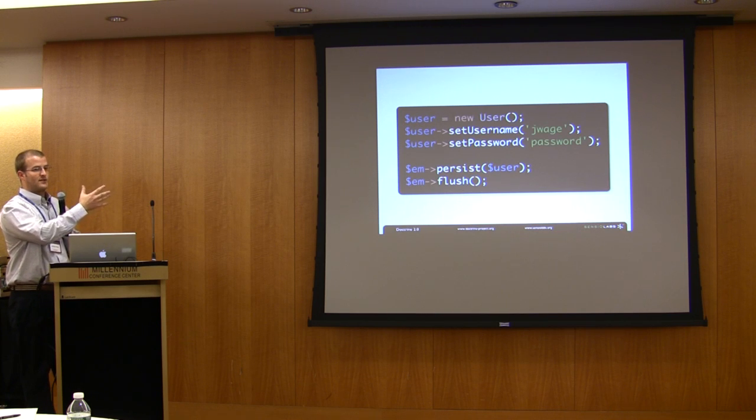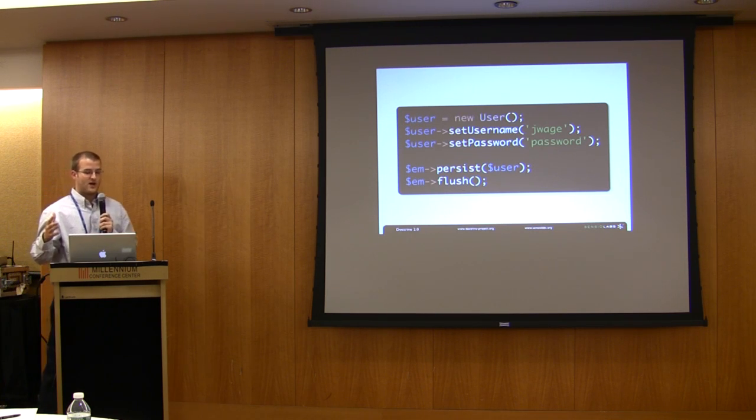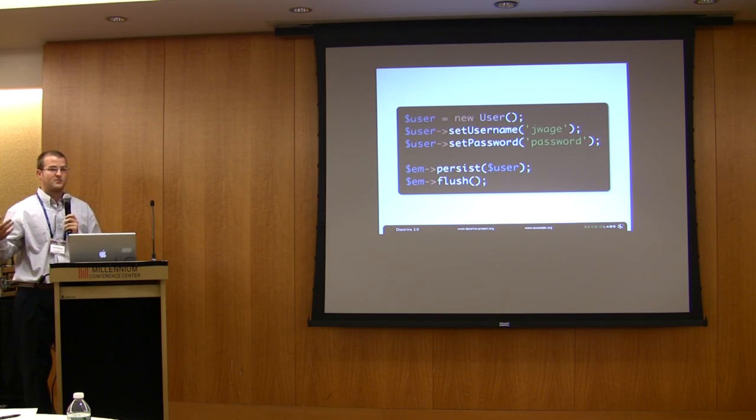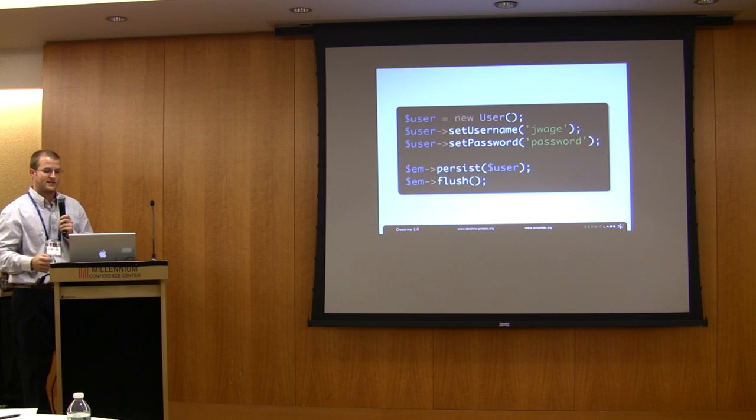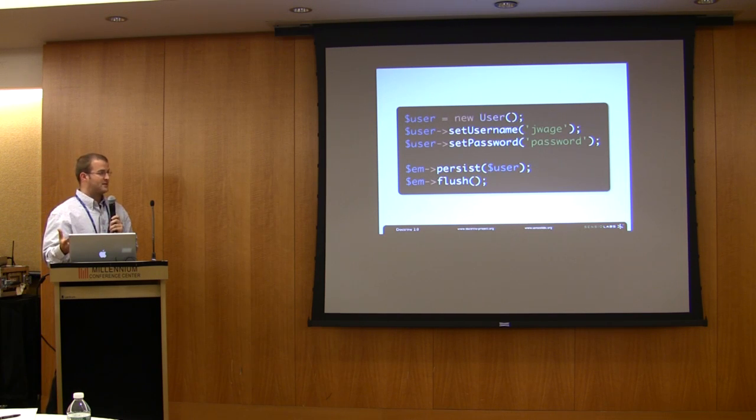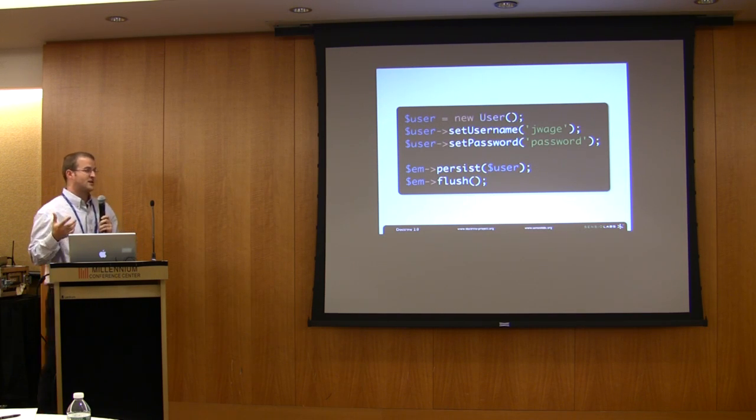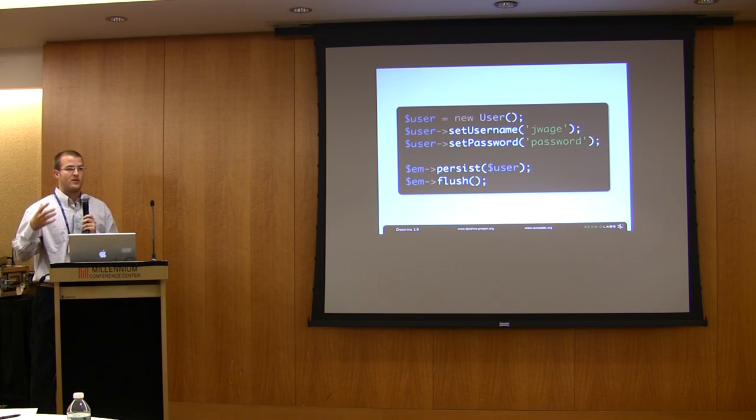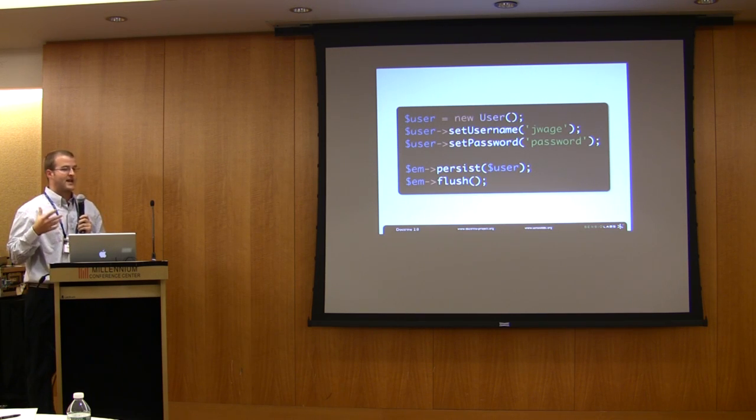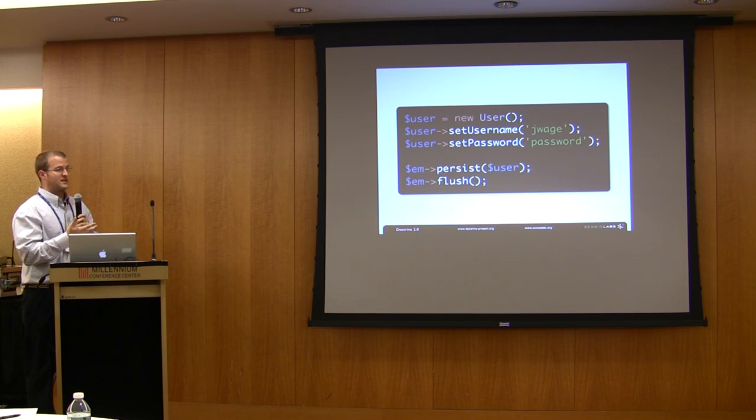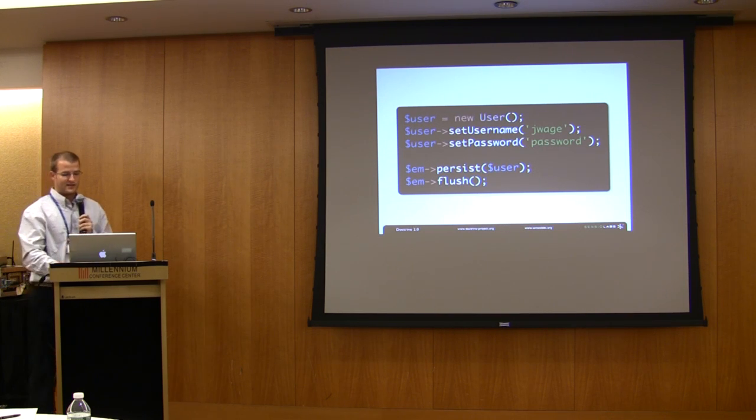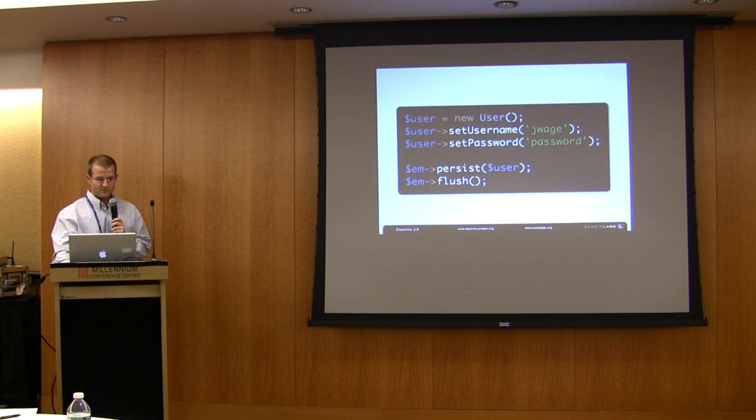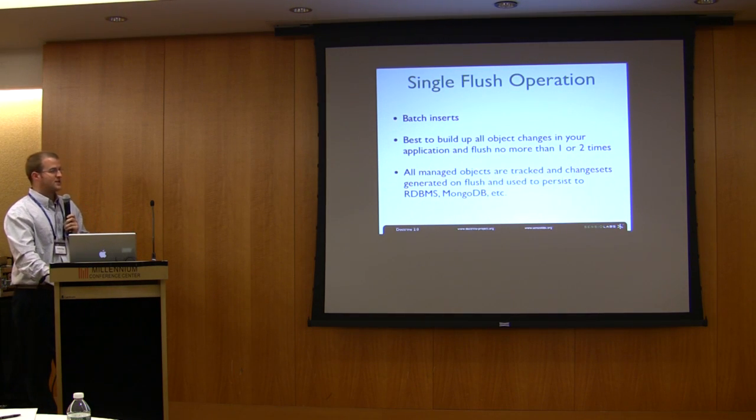So I have this new user object that the state is not managed yet by Doctrine. When I pass it to the persist function, it's now telling Doctrine, okay I have this object, you know the mapping information about it, I'm ready for you to manage its persistence. So now when I pass it to that persist method, inside of Doctrine as far as it's concerned, it has a new object. And when you call flush, it's going to go through all the managed objects and it's going to calculate what changes have occurred. Now it knows that this is a new object, so it results in an insert statement.